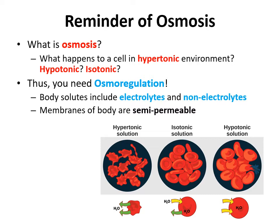You need osmoregulation because you're constantly exchanging water and nutrients with the environment through eating and drinking, and you constantly excrete them through sweat, urine, and other means. Without a mechanism to regulate water-salt balance, or if diseases damage it — like chronic kidney disease requiring dialysis — you can have very dangerous consequences.